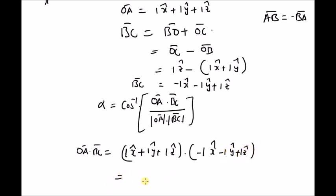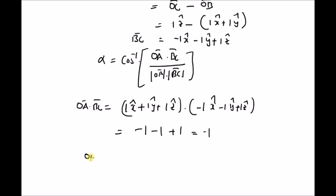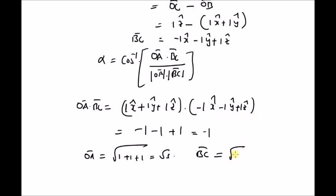This equals −1 − 1 + 1, because 1·x̂ · (−1·x̂) = −1, and 1·ŷ · (−1·ŷ) = −1, and 1·ẑ · 1·ẑ = +1. So the dot product is −1. The magnitude of OA is √(1+1+1) = √3. The body diagonal of a unit cube has length √3, and since BC is also a body diagonal, its magnitude is also √3. Therefore, the product of the two magnitudes is 3.